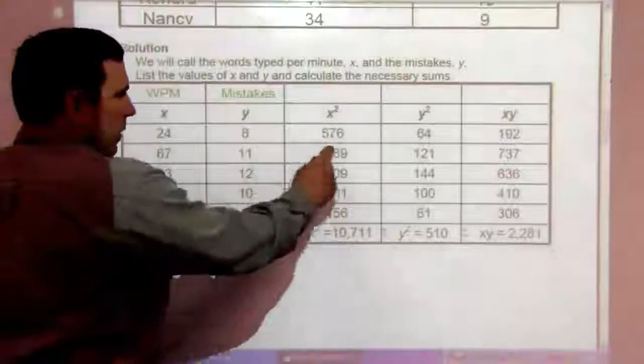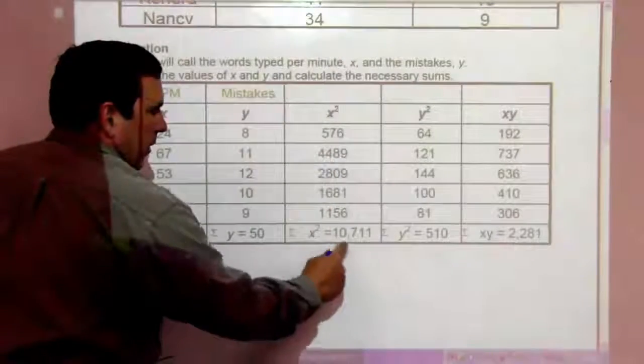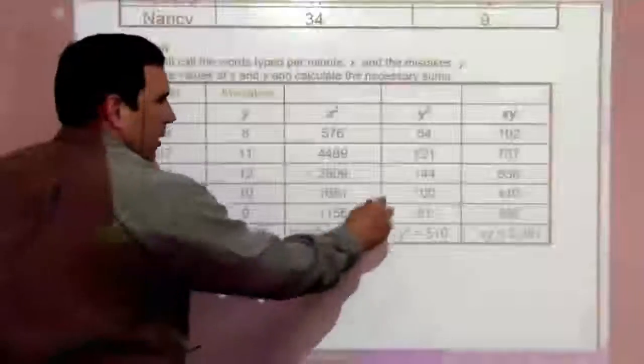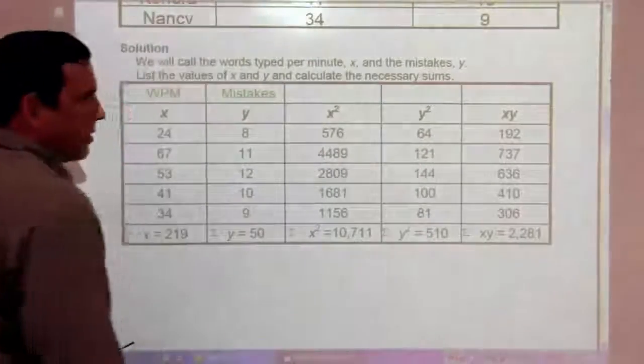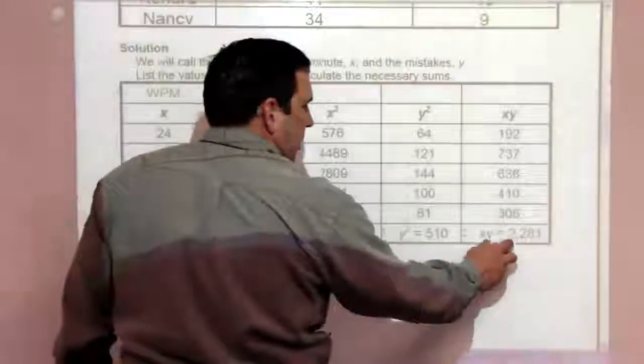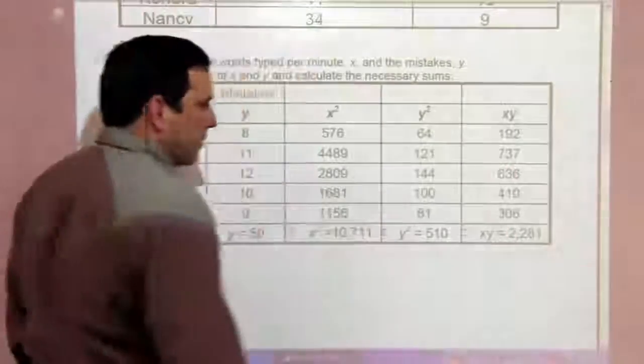These are all the Y's squared, and here's the sum of all those Y's squared. And this column is the sum of the X times Y's.